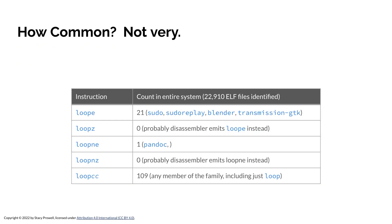How common are these? Not very, but they are around. LOOPE shows up 21 times in Pseudos, PseudoReplay, Blender, and Transmission. LOOPZ never shows up because it's the same mnemonic as LOOPE, and the disassembler probably prefers LOOPE over LOOPZ. LOOPNE shows up once in Pandoc. Any other loop conditional shows up about 109 times, and that could be just loop or any member of the loop family.